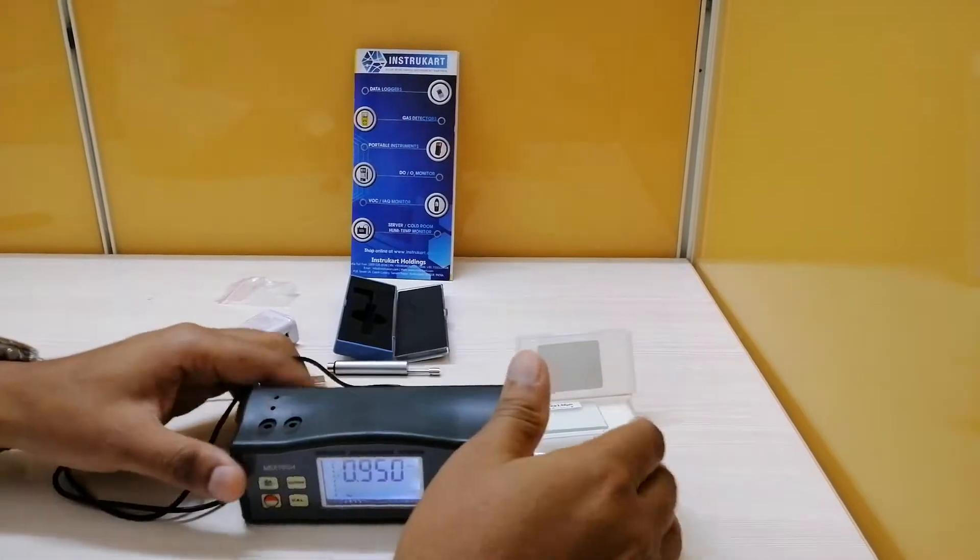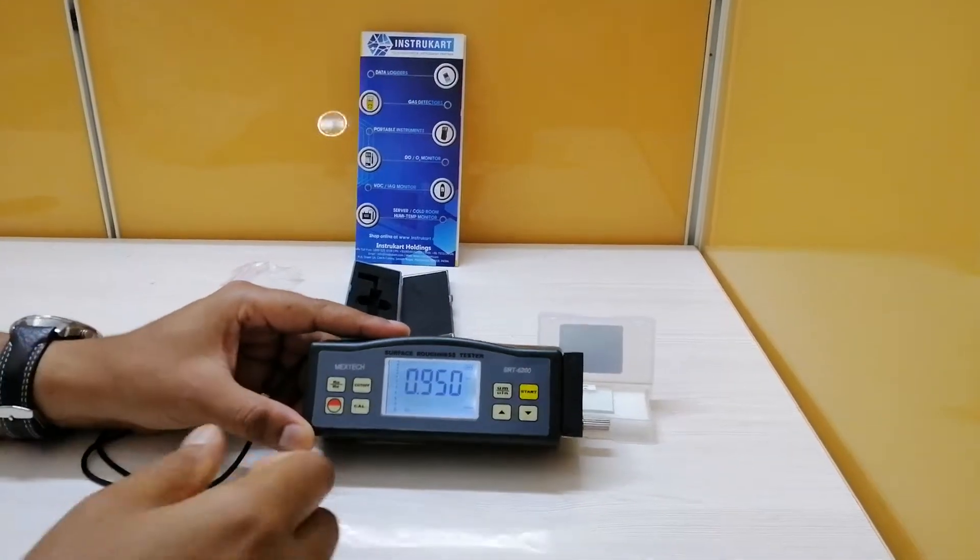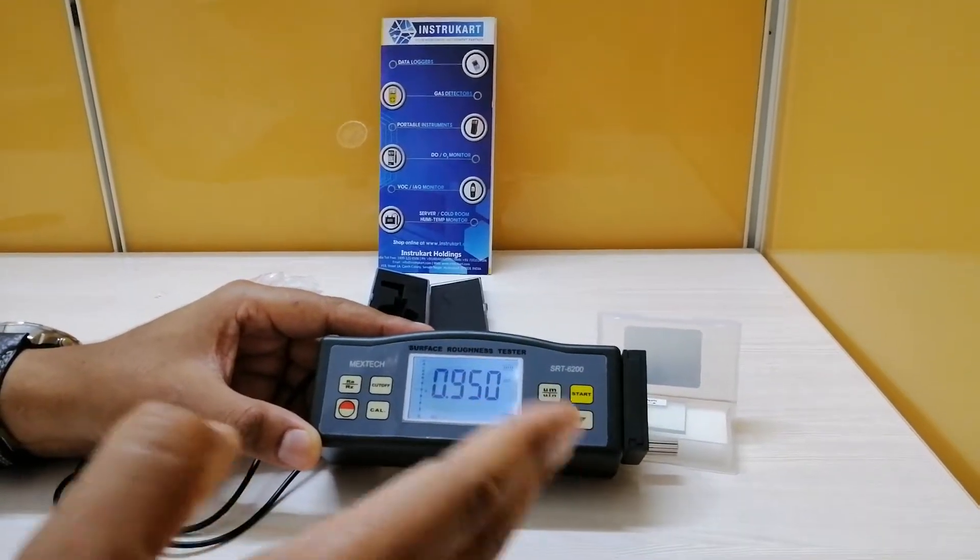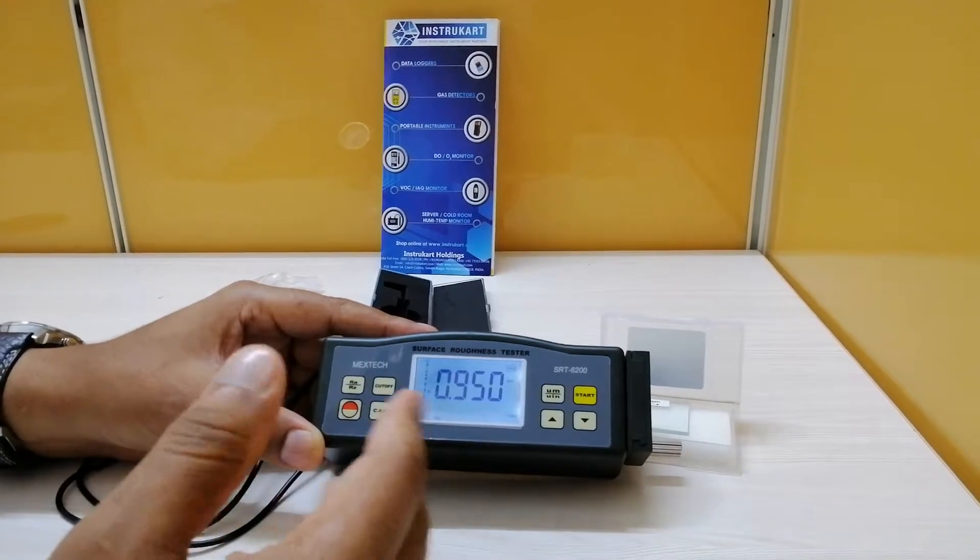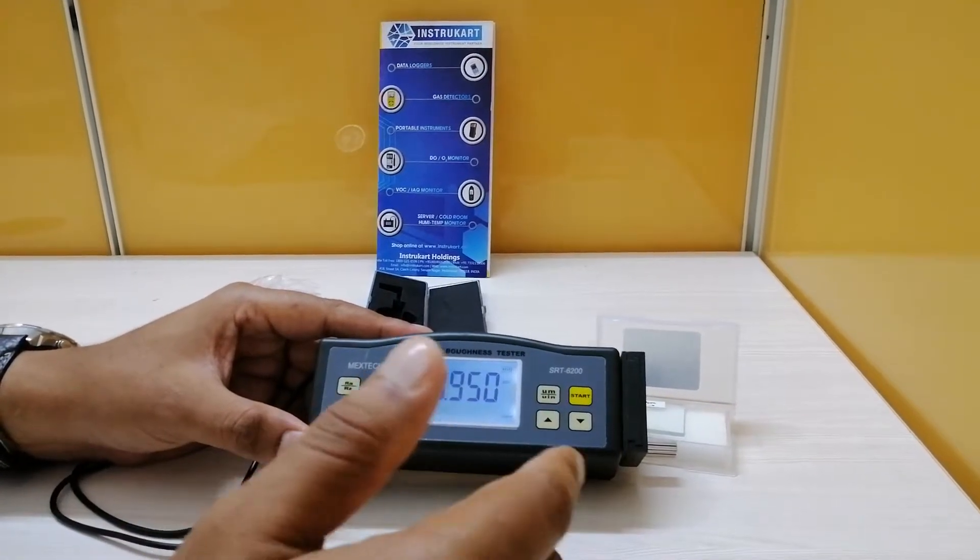Now it has some front keys along with this instrument, which are: cutoff key, parameter key, the display key, the power key, start key and the conversion key, up and down key, and the calibration key.